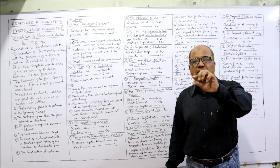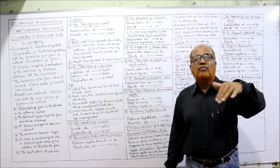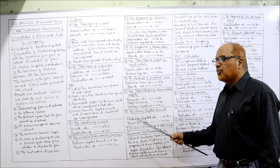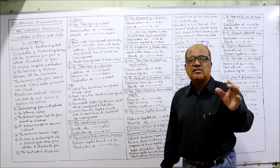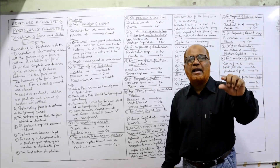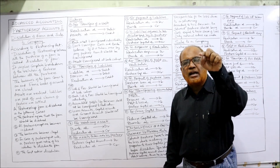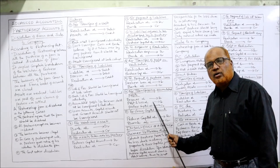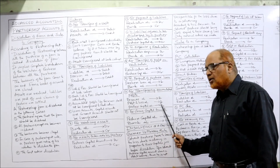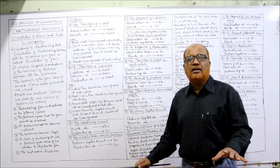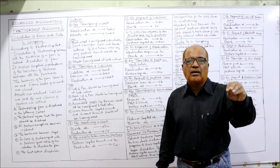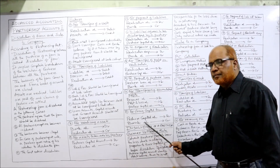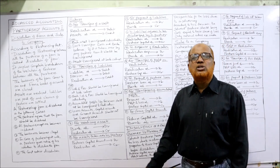For payment of partner's loan: if in the balance sheet there is a partner's loan on the liability side, entry is Partner's Loan Account debit, Bank Account credit. For transferring accumulated profits: if the balance sheet shows reserve fund, general reserve, or P&L account balance on the liability side, those should be transferred to partners' capital. Entry: Reserve Account debit, Profit and Loss Account debit, Partners' Capital Account credit. For closing capital accounts: finally, Partners' Capital Account debit, Bank Account credit. These are all the entries at the time of dissolution of a firm.